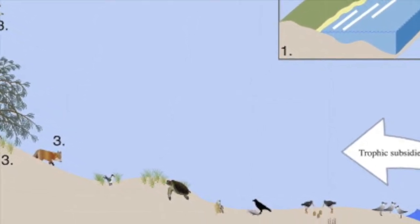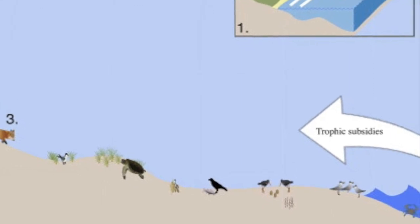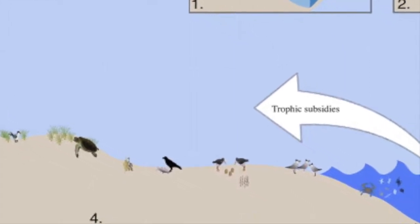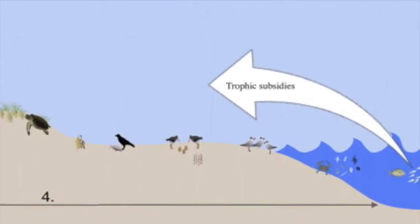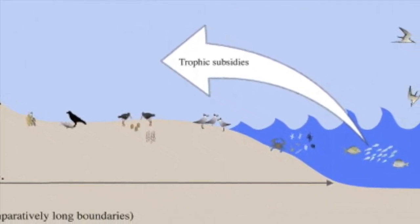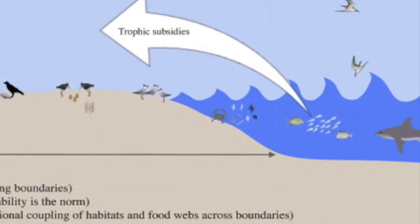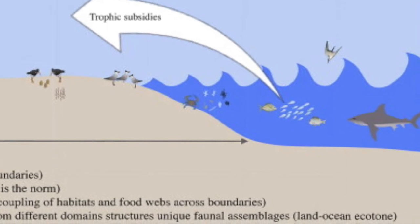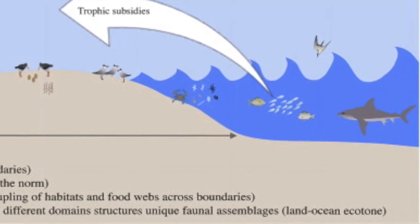Next, the backshore zone is inhabited by amphipods and isopods. The intertidal zone is inhabited by sand mussels and mole crabs. And lastly, the region closest to sea, the surf zone is inhabited by phytoplankton, zooplankton, pompano, mullets, sand sharks, and mollusks.